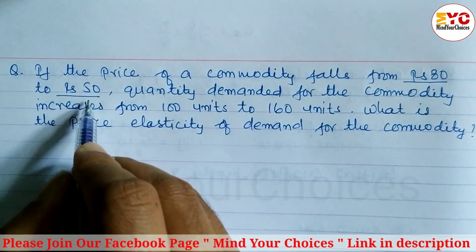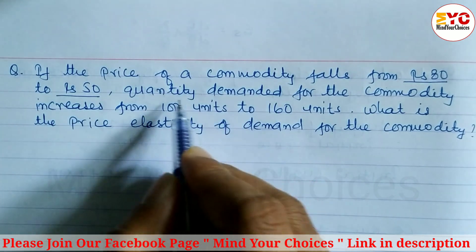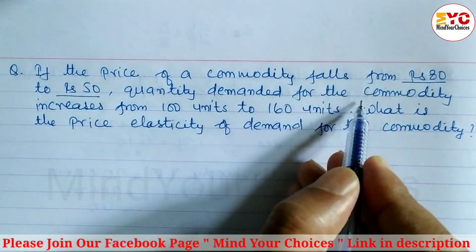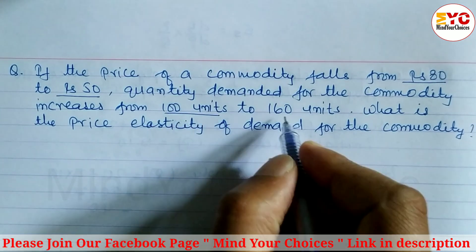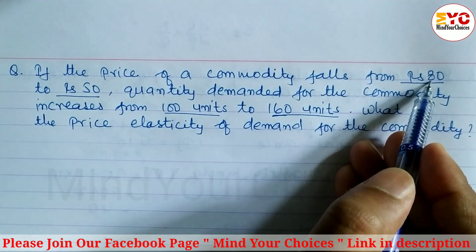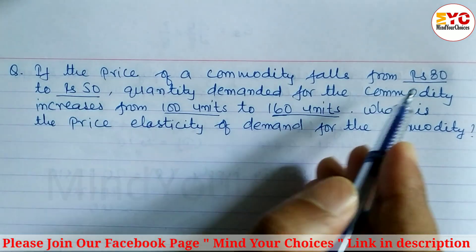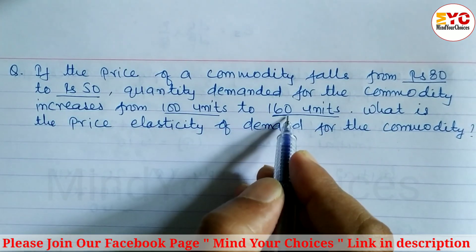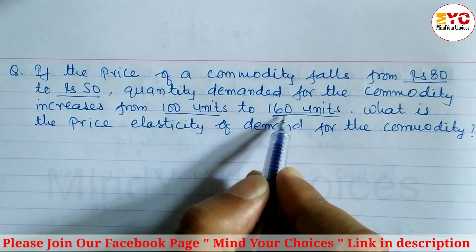When the price of the commodity decreases, definitely quantity demanded will increase. Quantity demanded for the commodity increases from 100 units to 160 units. When the price is Rs. 80, demand is 100 units, and when the price decreases from 80 to 50, quantity demanded increases from 100 to 160.